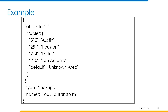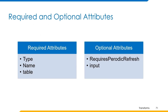The required attributes are type, name, and table. The optional attributes are requires periodic refresh and input. Let's have a quick demo on how this transform works, and then we'll move to the next transform which is lower transform.